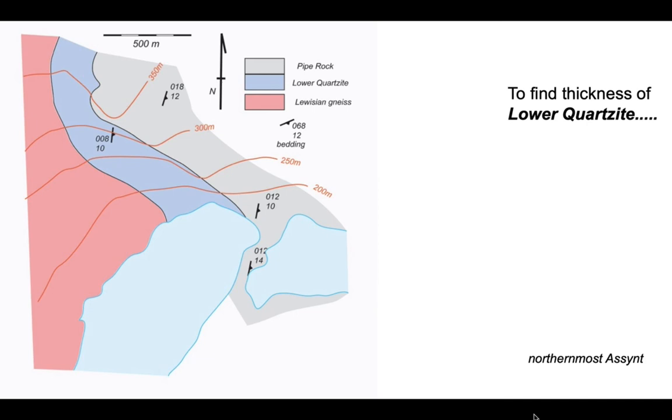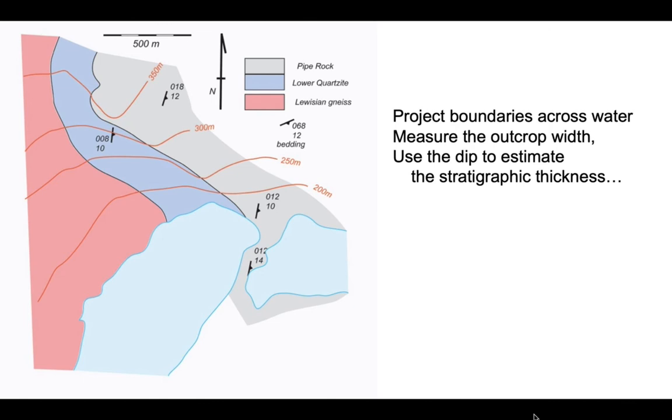So how are we going to do that? Well we're going to project the boundaries of the top and the base of this unit across the water, those lakes or lochs on the map. We're going to measure the outcrop width and then use the dip of this unit to estimate its stratigraphic thickness.